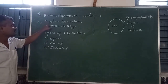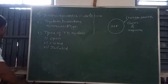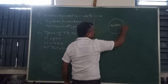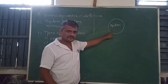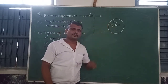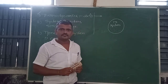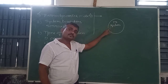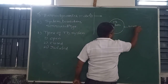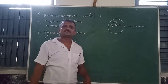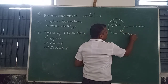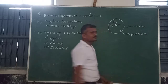Now let us come to the second topic — system, boundary, and surroundings. Let me draw a sketch here. This is one system — I would like to call it a thermodynamic system. As you know, thermodynamics deals with energy possessed by gases and vapors. If there is no energy, we cannot call it a thermodynamic system. A thermodynamic system is a definite area where some thermodynamic process is taking place.